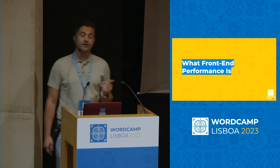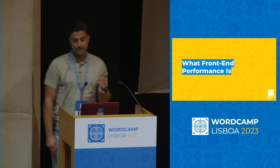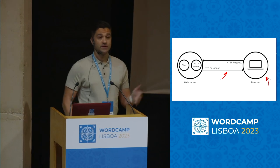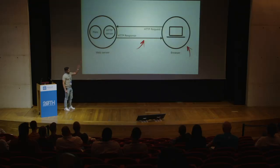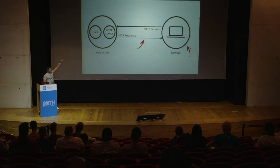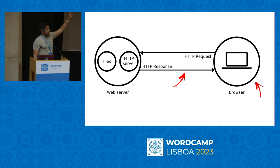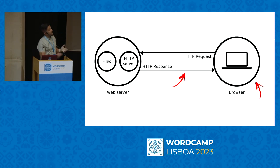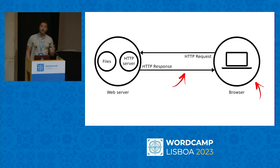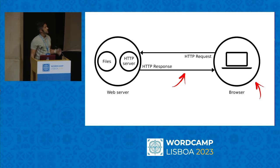Let's look at what front-end performance is and what it takes for the browser or user device to display a page. This is the oversimplified diagram of what happens when you type a URL in your browser: it starts with the HTTP request, there's a DNS lookup to find where the website is hosted, the request goes to the server, the server returns either a static page or a dynamic one — as in WordPress. There are assets on the server: CSS, JavaScript, images, all of that. The response as an HTML document is returned to the browser, which then does all the hard work.